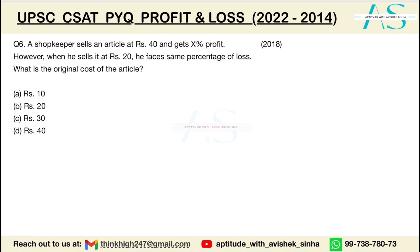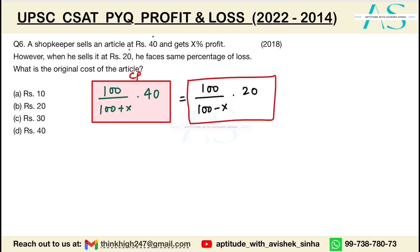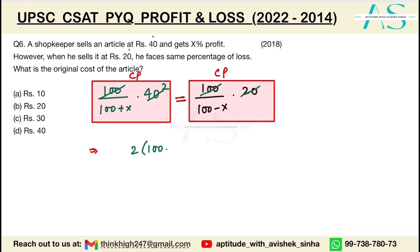A shopkeeper sells an article at ₹40 and gets x% profit. So cost price = 100/(100+x) × 40. When he sells it at ₹20 he faces the same percentage of loss. So cost price = 100/(100−x) × 20. Since both expressions equal the cost price, we equate them.